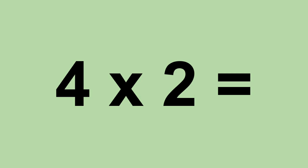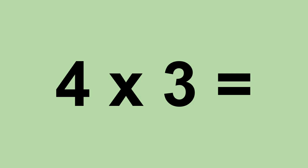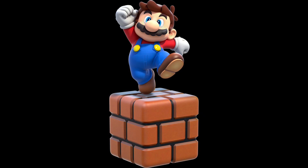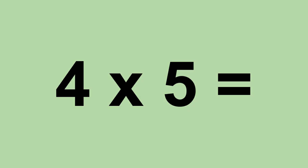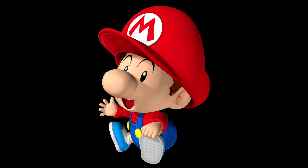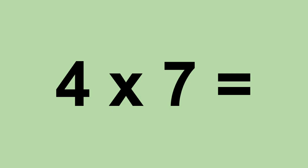Four times two equals eight. Four times three equals twelve. Four times four equals sixteen. Four times five equals twenty. Four times six equals twenty-four. Four times seven equals twenty-eight.